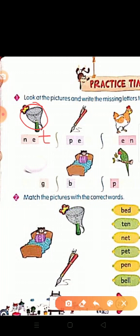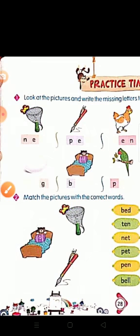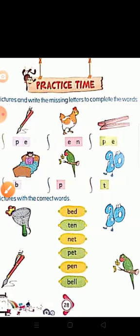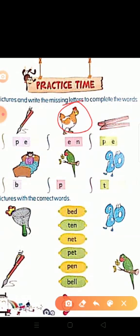Next picture is pen. Tell me what is this? This is pen. P, E, N, pen. What is this? This is hen. H, E, N, hen.